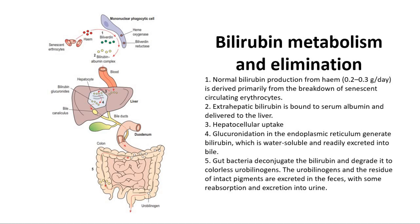There is then hepatocellular uptake, and glucuronidation in the endoplasmic reticulum generates bilirubin which is water-soluble and readily excreted into bile. After that, the bile flows through bile ducts and reaches the duodenum and then the colon.